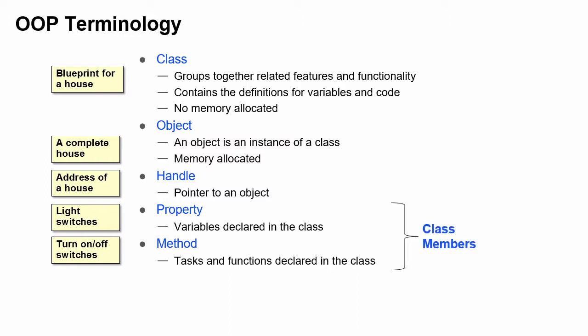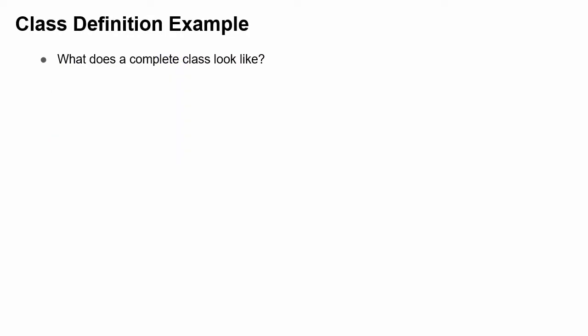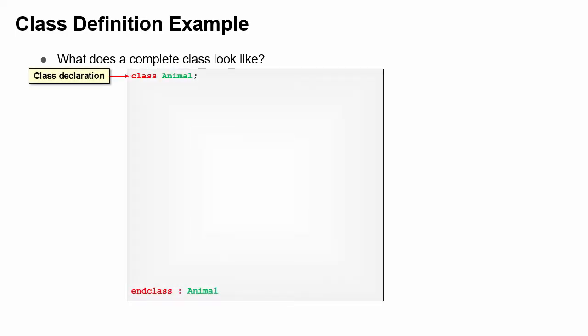Together, properties and methods are known as the class members. So let's look at an example of a class. The class animal describes the characteristics of a real animal. Now, a real animal has many properties. Our example has an age and a name.